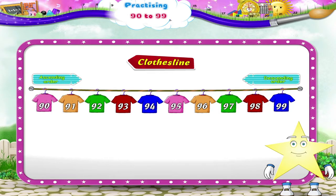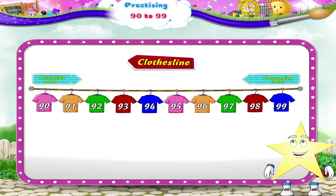Counting in descending order, we go 99, 98, 97, 96, 95, 94, 93, 92, 91, 90.